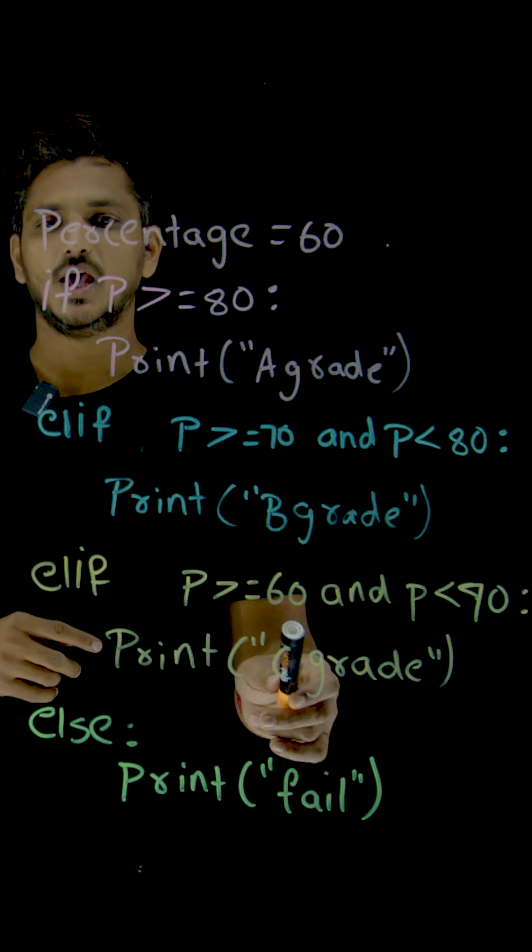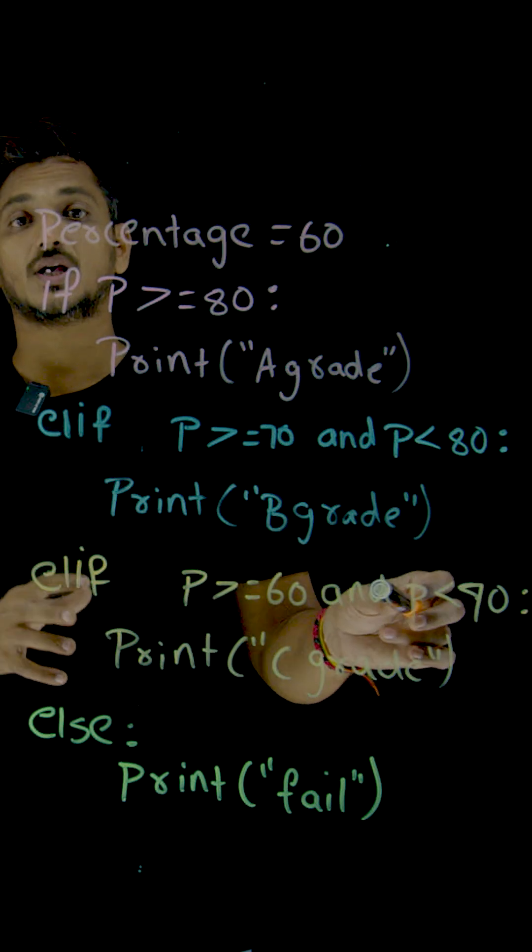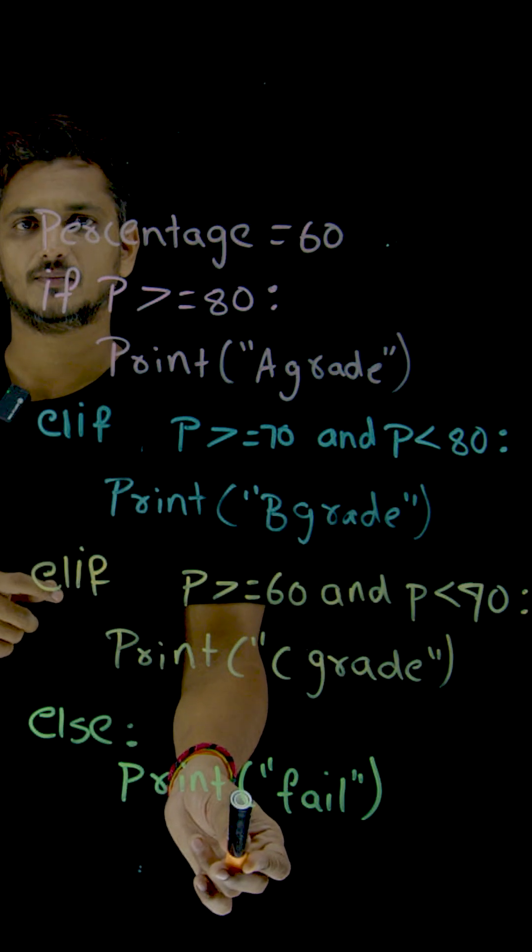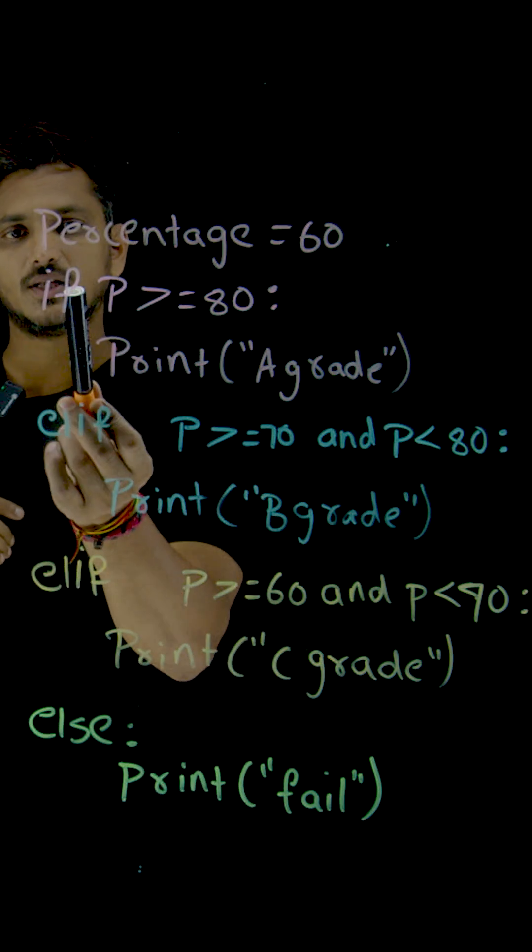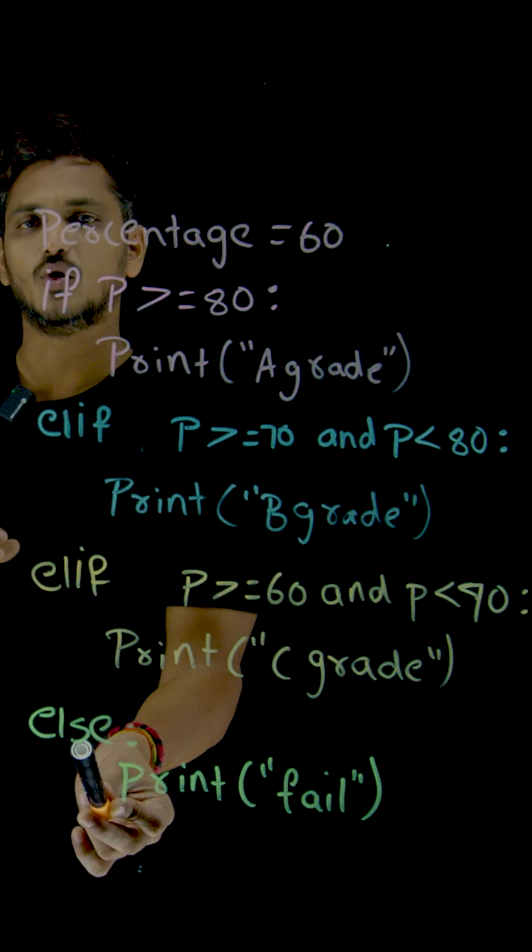Execute the body of this else if. If all these conditions are false, then execute else body. When we are going to else statement, if all these if, else if, else if, all these are false, then only it will go to else body.